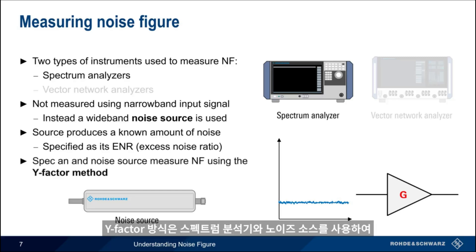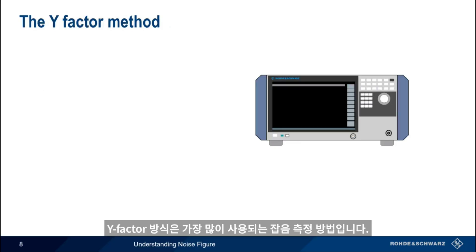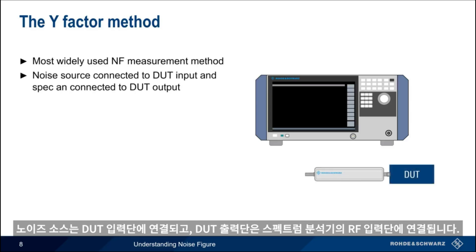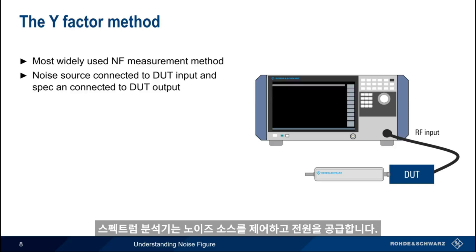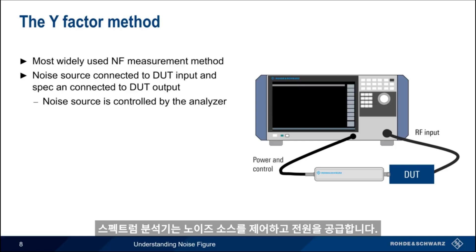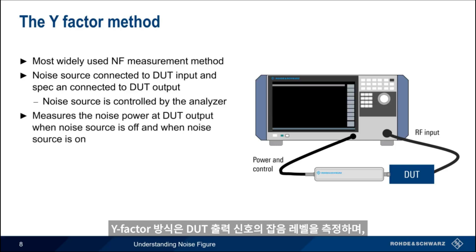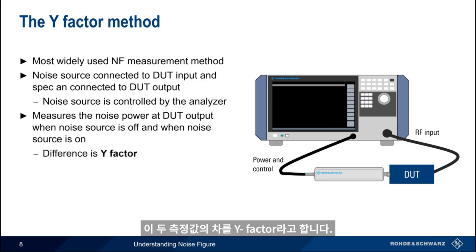The combination of a spectrum analyzer and a noise source can be used to measure noise figure using something called the Y-factor method. Y-factor is the most widely used noise measurement method. A noise source is connected to the device under test input, and the output of the DUT is connected to the spectrum analyzer's RF input. In almost all cases, the spectrum analyzer also controls and provides power to the noise source. The Y-factor method measures the noise power at the DUT output when the noise source is off, and then again when the noise source is on. The difference between these two measurements is called the Y-factor.